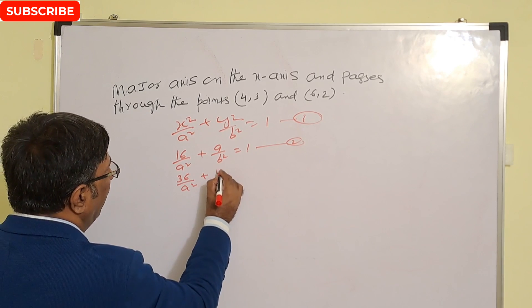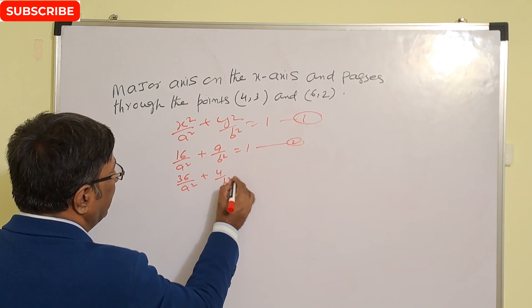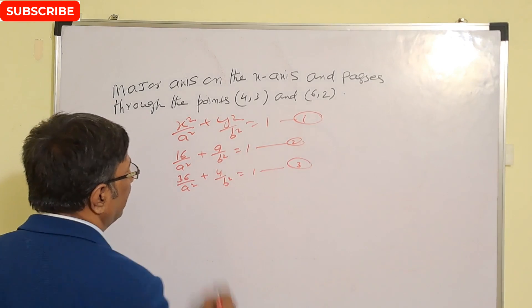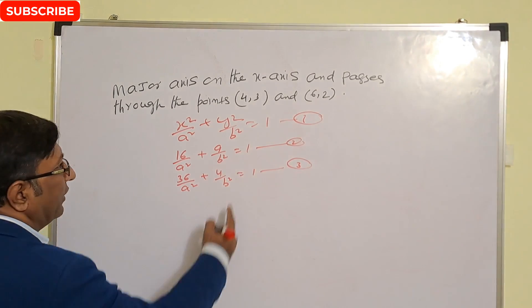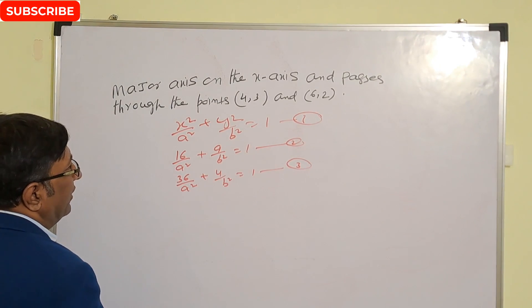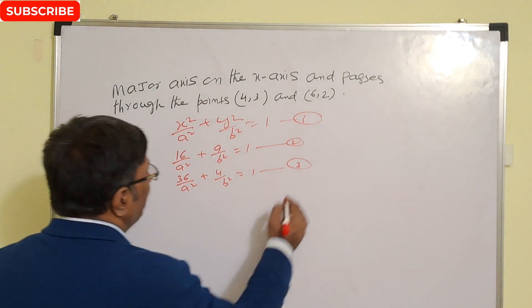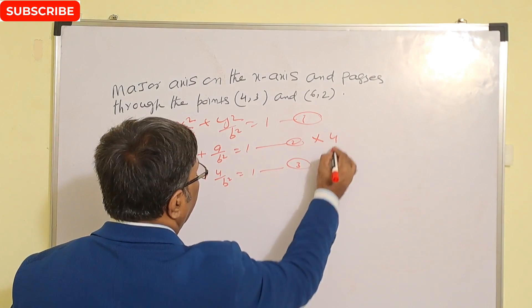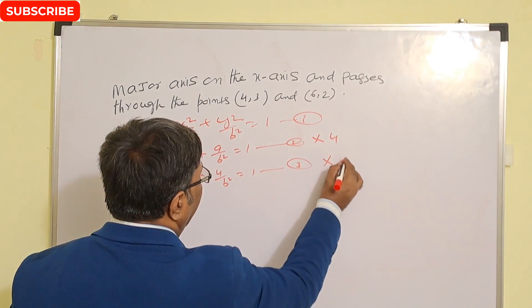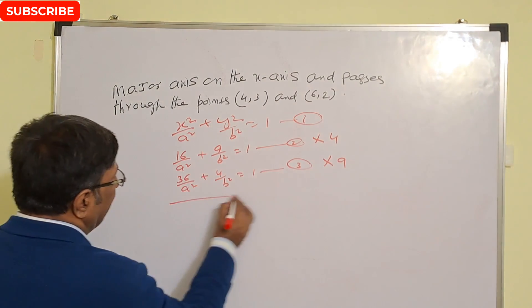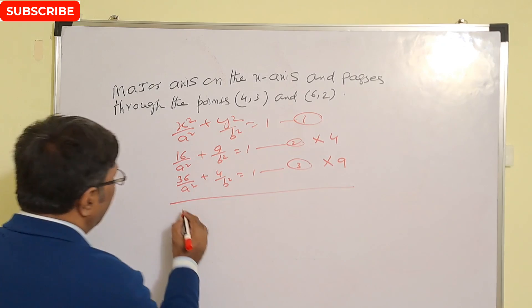Substituting (6,2): 36 upon a² plus 4 upon b² equal to 1. This is our third equation. Now we solve equations two and three. First, multiply the second equation by 4 and the third equation by 9, then subtract.